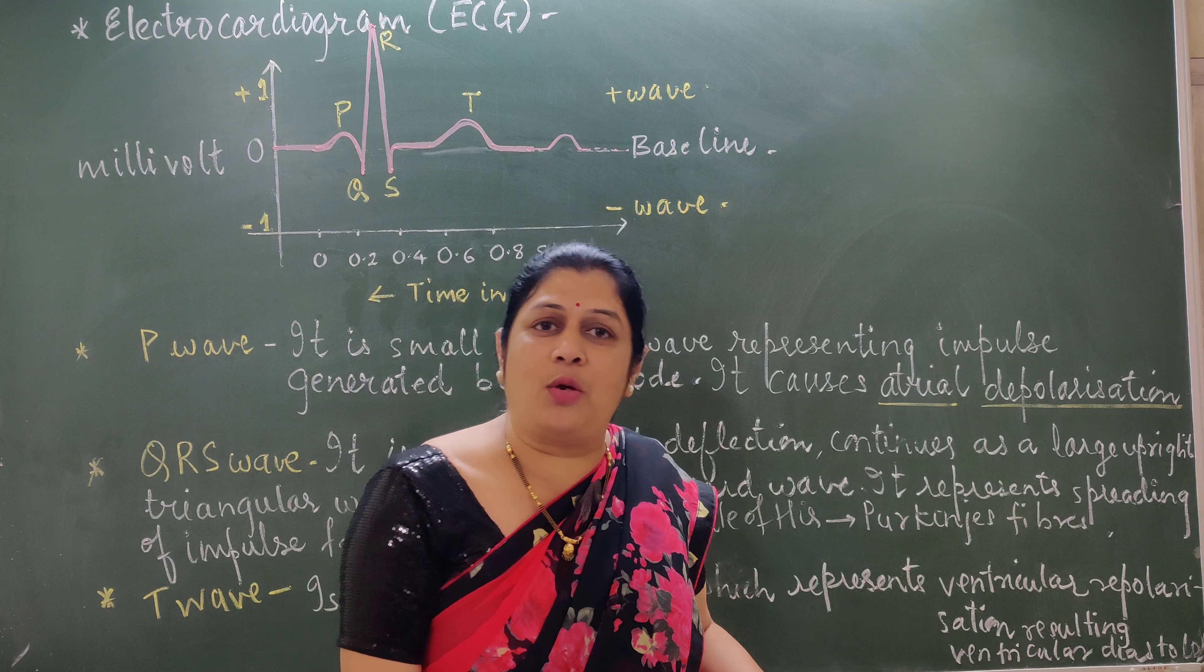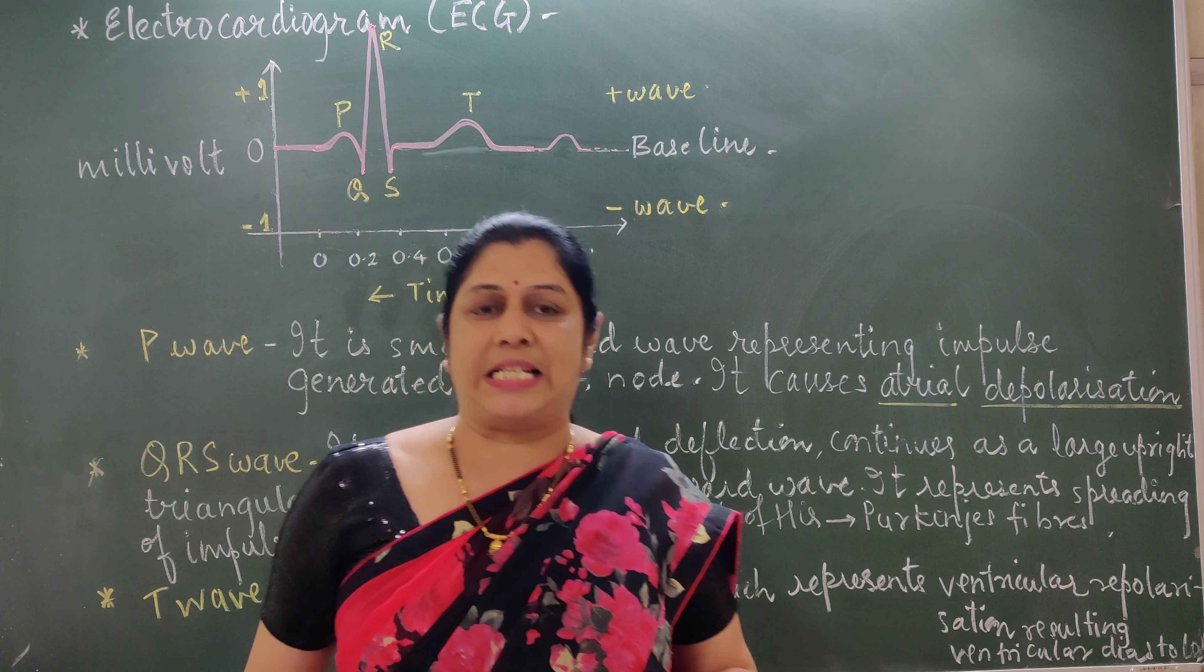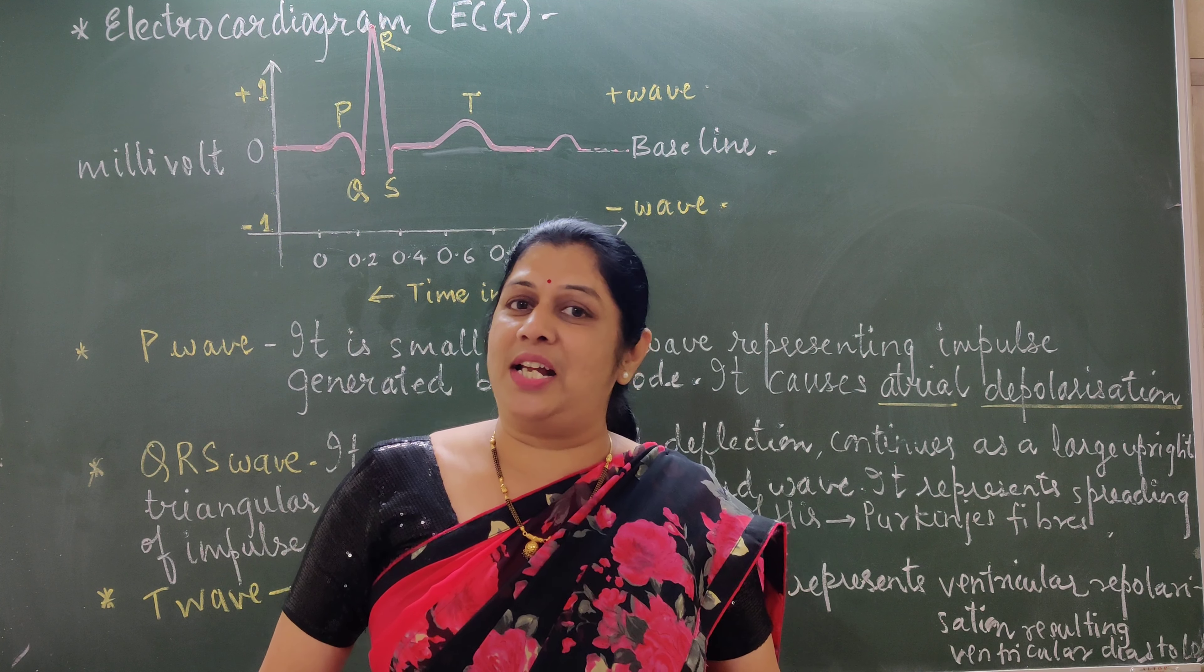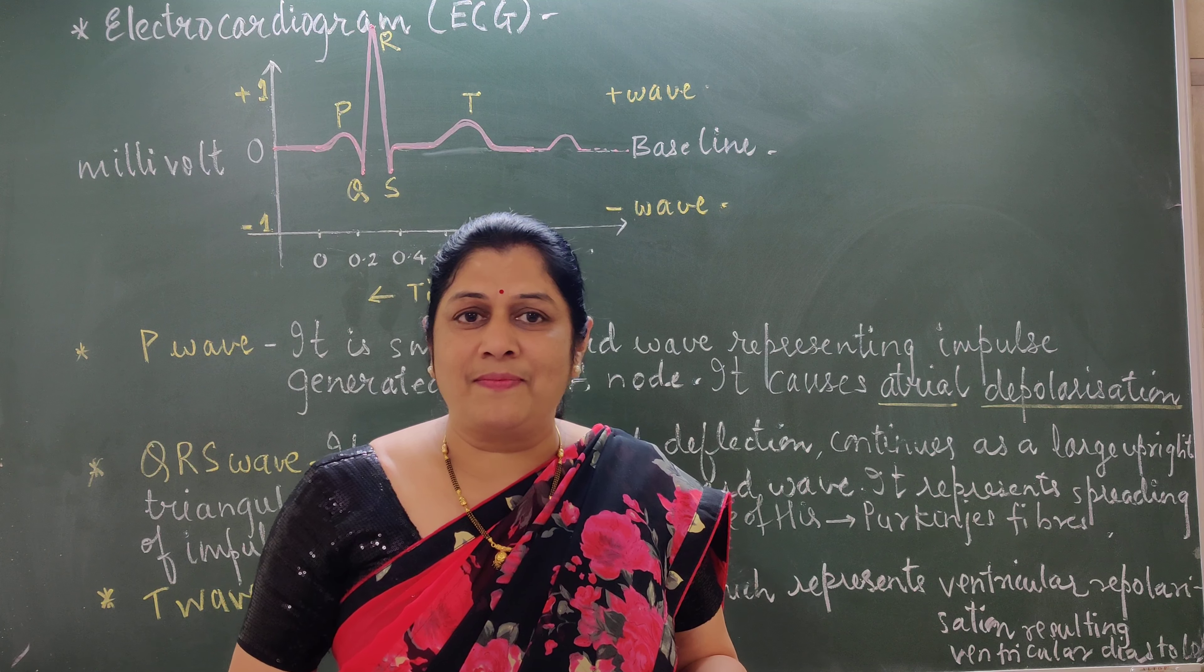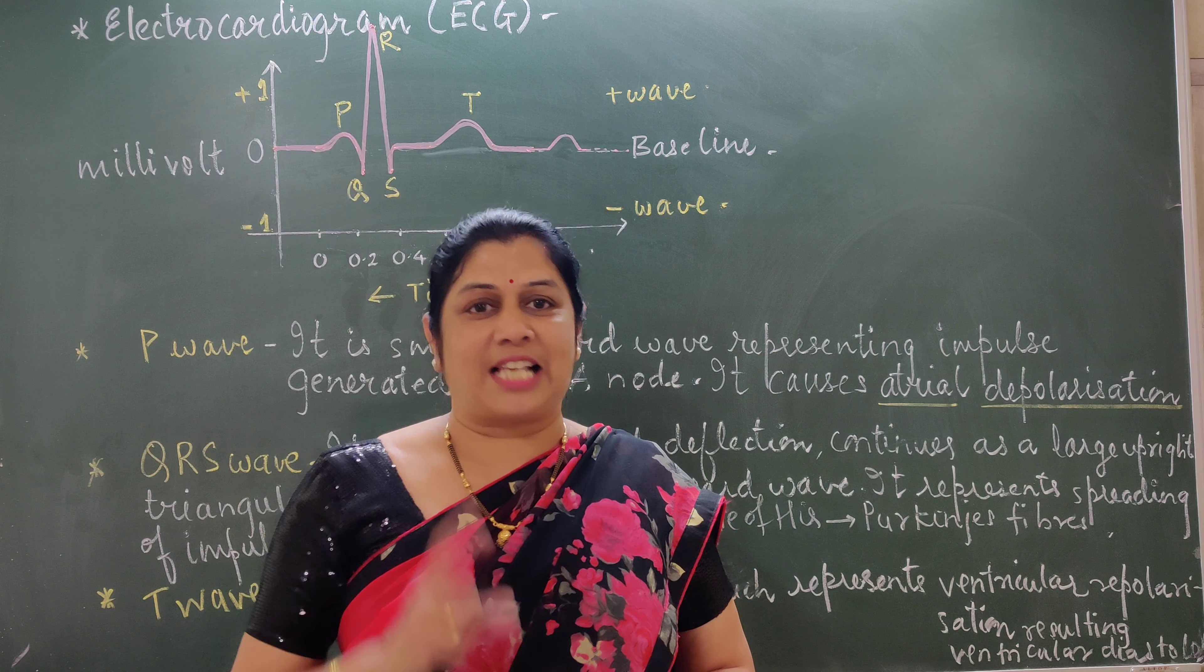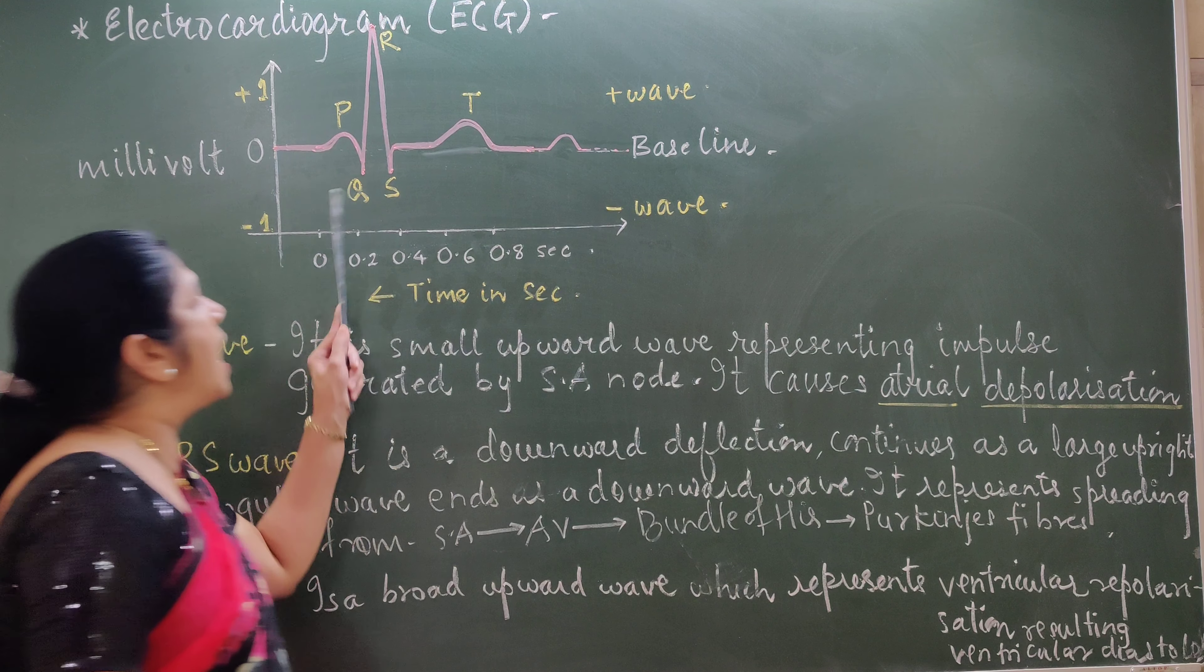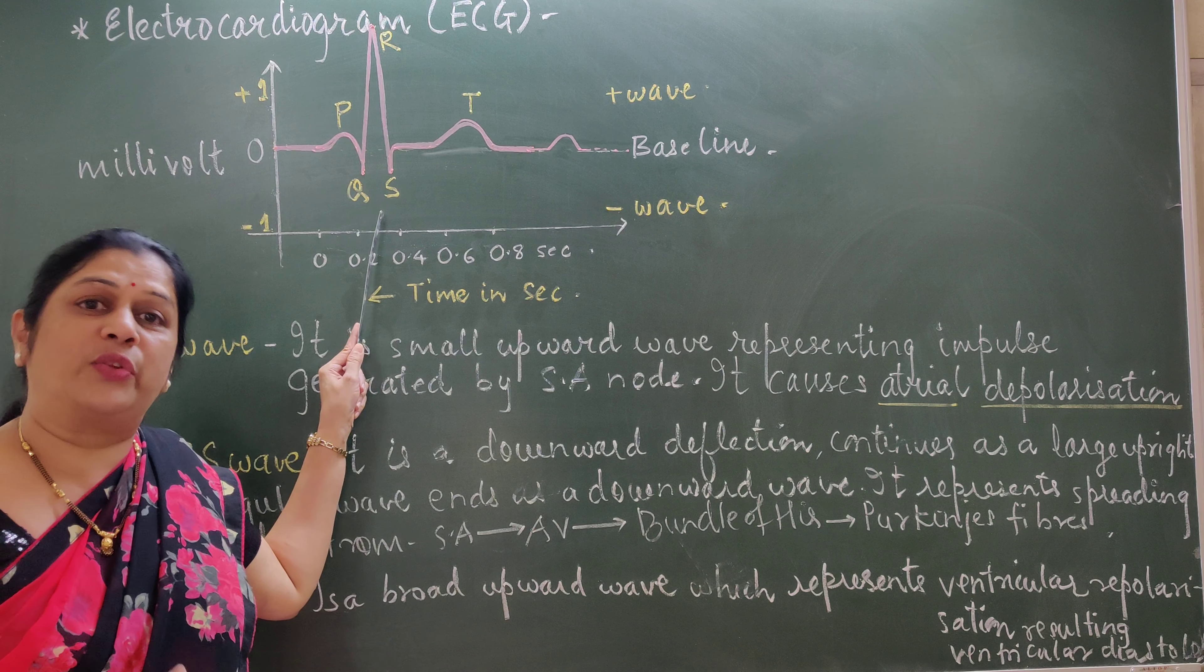Ventricular depolarization, which remains for the period of 0.3 seconds. During this, what happens? Ventricles undergo ventricular systole. That is, ventricles undergo contraction. And during ventricles when they undergo contraction, the blood from the respective ventricles will enter into the blood vessels as aorta and pulmonary trunk. It takes 0.3 seconds. So, the QRS wave is completed within a period of 0.3 seconds.